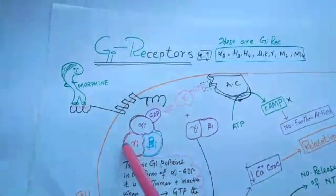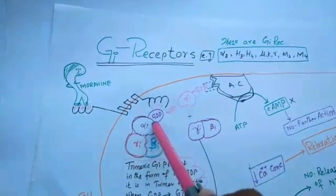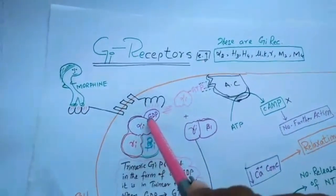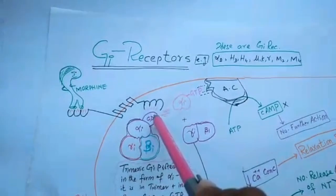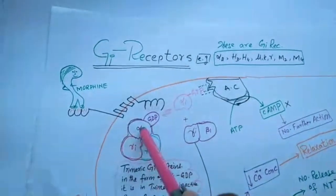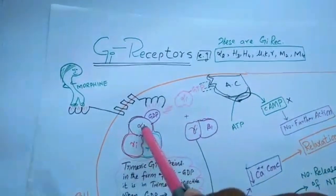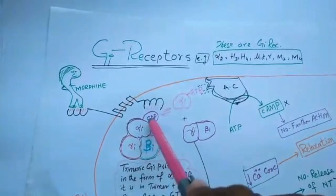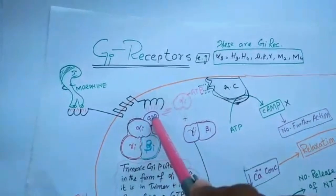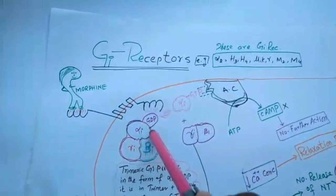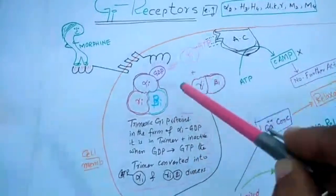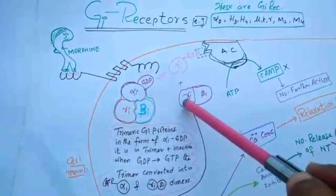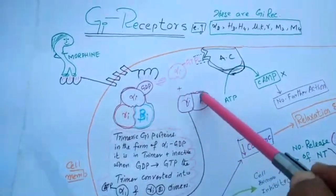This protein is in trimeric form until the alpha-i is in GDP form. When alpha-i inhibitory is phosphorylated—that is, the GDP converted into GTP—this trimeric form converts into alpha-i monomer and gamma-beta-i dimer.